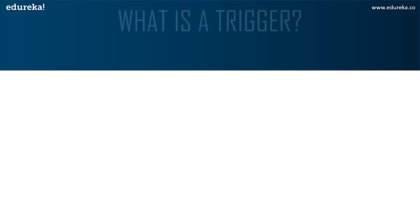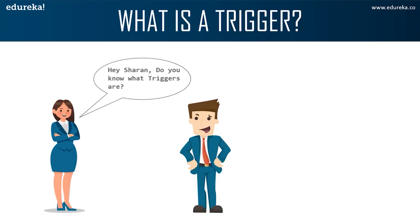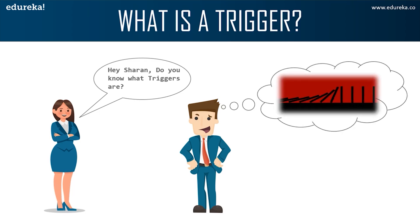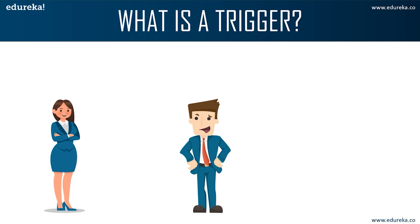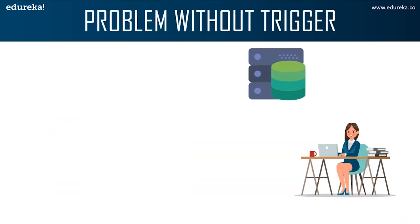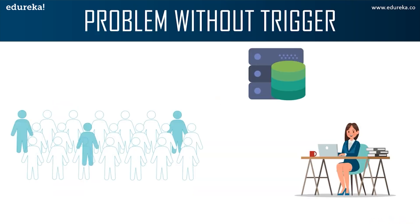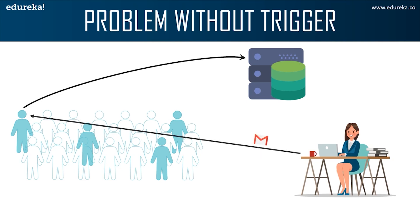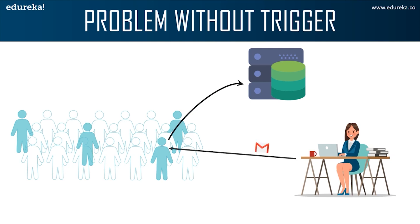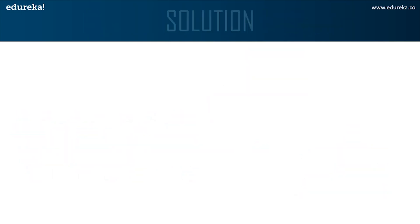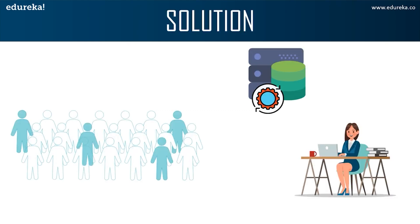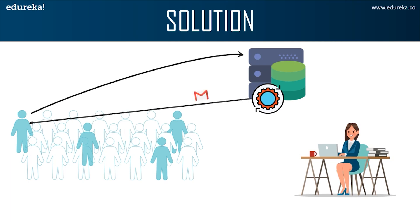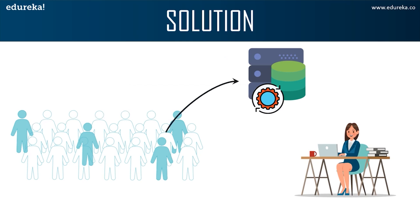Let's try to understand it in a better way. Here we can see Anna is asking Sharon about triggers. Sharon imagined a trigger as a falling domino. Anna is a marketing officer in a company. When new customer data is entered into the company's database, she has to send a welcome email to each and every new customer. If it's one or two customers, Anna can do it manually, but what if the count is more than a thousand? It will be a repetitive and tiring job. In such a scenario, triggers come in handy. Anna can easily create a trigger which will automatically send a welcome email to new customers once the data is entered into the database. After creating the trigger, she doesn't have to monitor it frequently, and the efficiency of the work is increased.